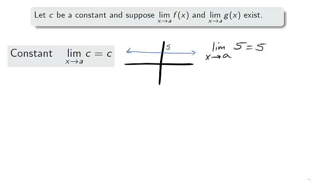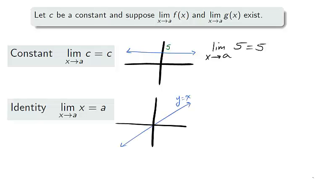The constant limit law states the obvious. If a function always outputs 5, then the limit to any x value will be 5. The identity law has similar reasoning. If y and x are always the same, when x approaches a, then so does y.